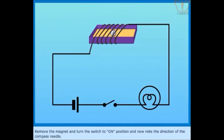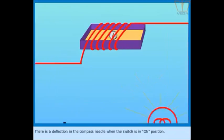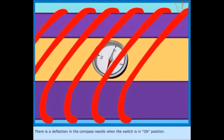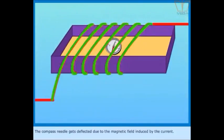Remove the magnet and turn the switch to on position. Now note the direction of the compass needle. There is a deflection in the compass needle when the switch is in on position. The compass needle gets deflected due to the magnetic field induced by the current.